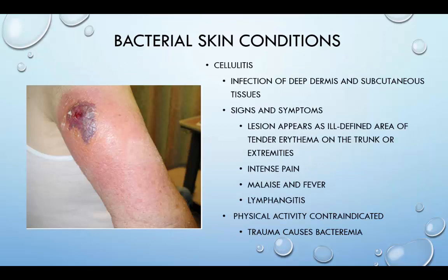Cellulitis is caused by beta-hemolytic streptococcal or Staphylococcus aureus bacteria. It occurs as an infection of the deep dermis and subcutaneous tissues. A lesion appears as an ill-defined area of tender erythema on the trunk or extremities. These lesions usually occur around a break in the skin such as surgical wounds, trauma, and tinea infections such as athlete's foot or ulcerations. This condition is associated with intense pain, malaise, fever, and lymphangitis — inflammation in the lymphatic vessels. Physical activity is contraindicated. Trauma can cause bacteremia, which is the presence of bacteria in the blood and can be fatal. In mild cases, oral antibiotics such as penicillin and amoxicillin can treat this condition. Most cases of superficial cellulitis improve within one day; substantial cases may take 10 to 20 days for recovery.